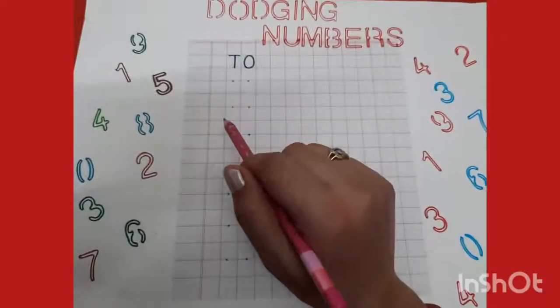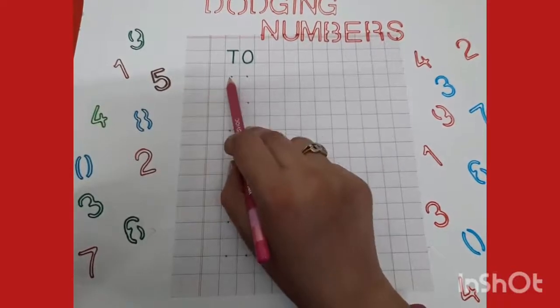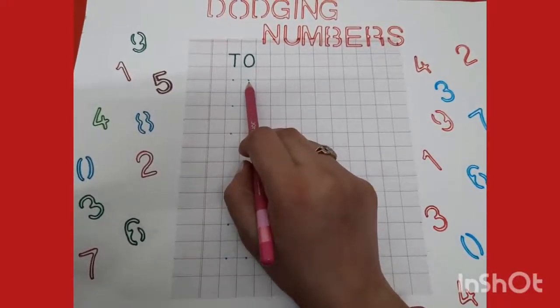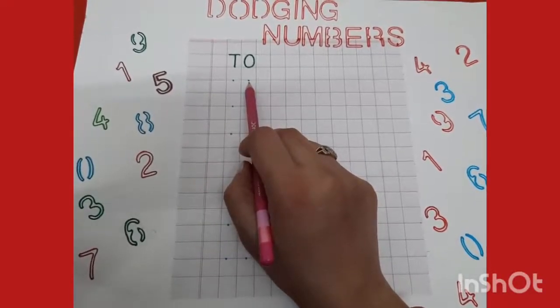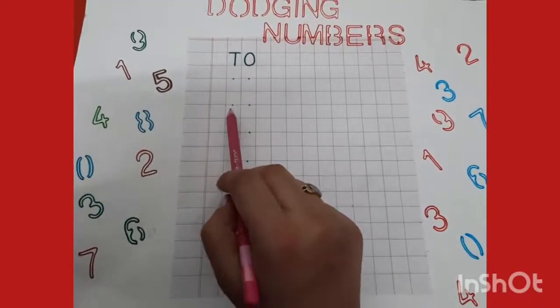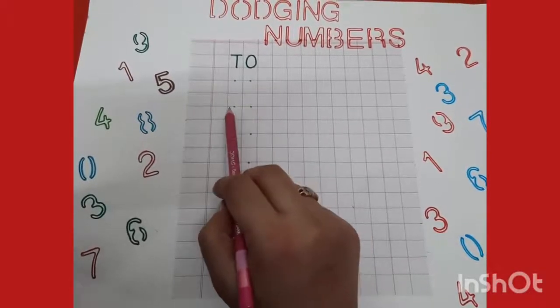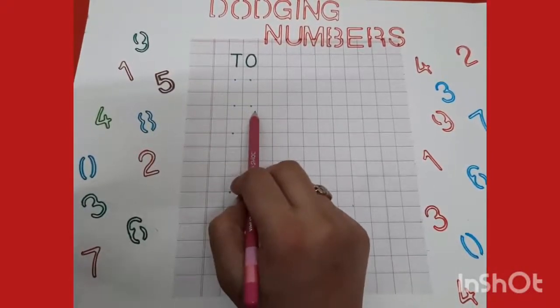Let's start dosing numbers from one to forty. First number is one, nine, nineteen. Second is two, nine, twenty-nine. Two, nine, twenty-nine.